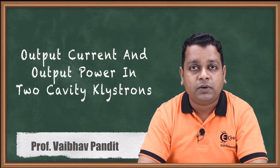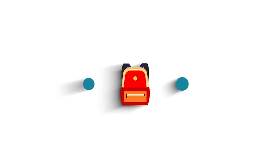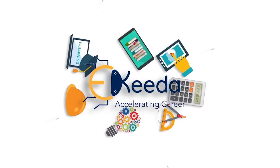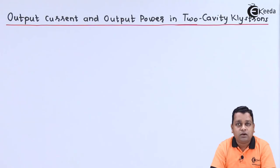Let us have a precise formulation of output current and output power for the identical cavities for the device. So here we start with our topic: output current and output power for two-cavity klystron.